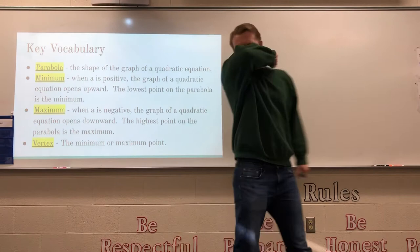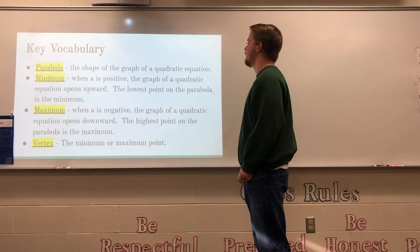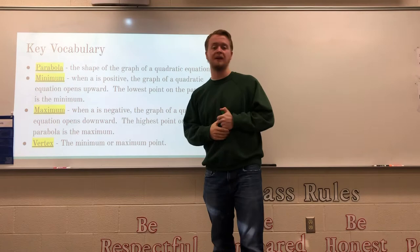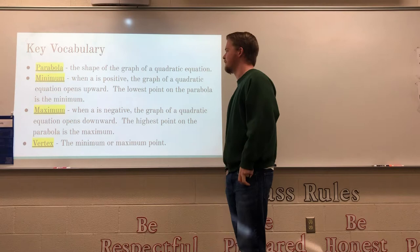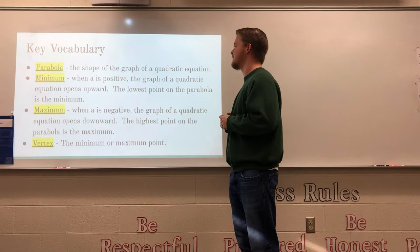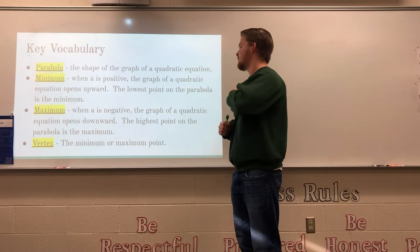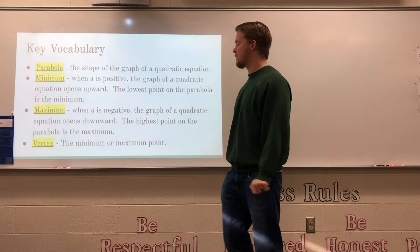A few key vocabulary words in this section. First, parabola — the shape of a graph of a quadratic equation on a coordinate plane. The minimum is when a is positive: the graph opens upward and the lowest point is the minimum. Just the opposite, when a is negative the graph opens downward.